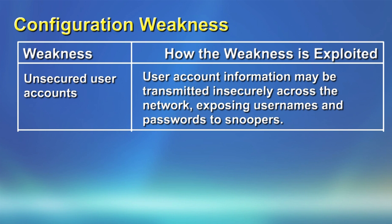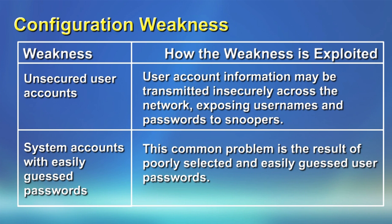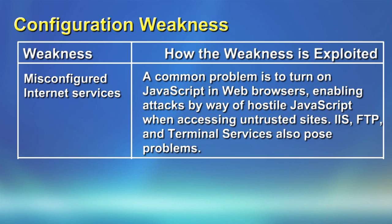Configuration weaknesses come from unsecured user accounts where information is transmitted insecurely, usernames and passwords are known to people, and no encryption or cryptographic methodology is used. System account names are easily guessed — people use family names, or their father's, mother's, or sister's name, which are easily guessed by attackers. Misconfigured internet services are also a problem. We run many services on the operating system such as JavaScript, Internet Information Server, and FTP, and all of these are vulnerable because we do not properly secure them — we run services even when we don't need them.